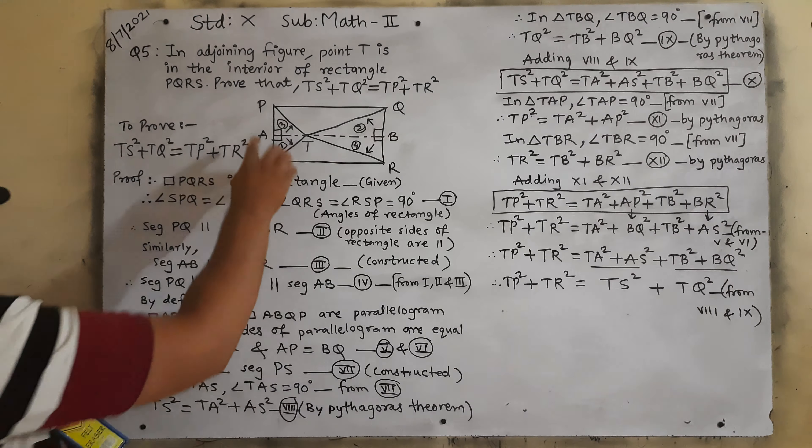There are 4 triangles where we can utilize Pythagoras theorem. In triangle TAS, angle TAS = 90° — because AB is perpendicular. So we can apply Pythagoras theorem: TS is the side opposite 90°, therefore TS² = TA² + AS². This is equation 8 by Pythagoras theorem.